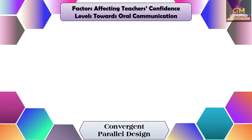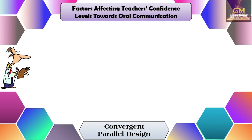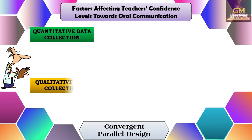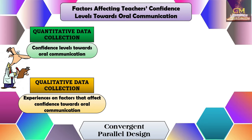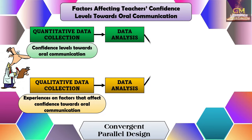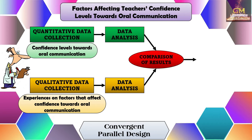For example, consider determining the factors affecting teachers' confidence levels towards oral communication. Since the researcher is conducting a convergent parallel design, he is expected to collect both quantitative and qualitative data at the same time. The quantitative data could be the confidence levels towards oral communication, while the qualitative data could be the experiences of selected participants on various factors that affect confidence levels towards oral communication. After both datasets are collected, the researcher conducts data analysis, then compares and analyzes the results to come up with a detailed interpretation.